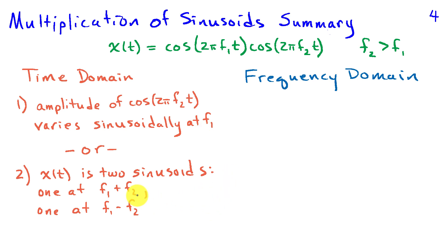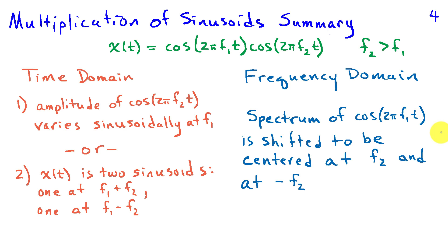The other way to think about it is that x of t is equivalent to having two sinusoids, one at the sum of the frequencies and the other at the difference. Now in the frequency domain, I can think about this as taking the spectrum of my sinusoid with frequency f1, shifting it so that it's centered at f2 and minus f2. So I'm shifting this spectrum to the right by f2 hertz and to the left by f2 hertz.